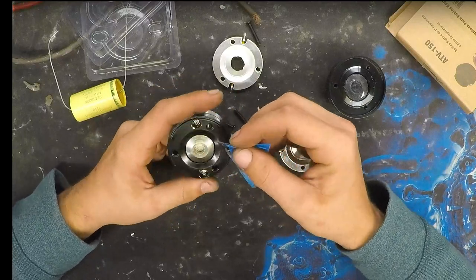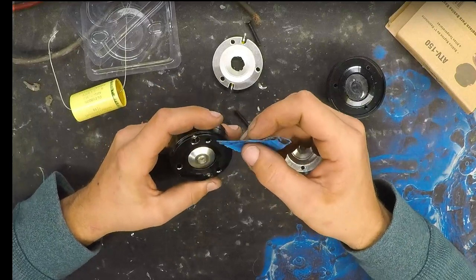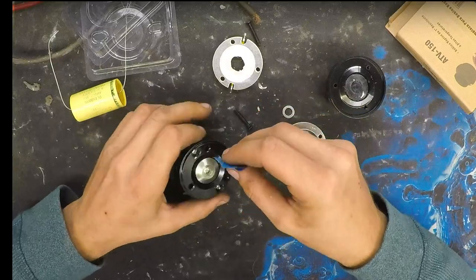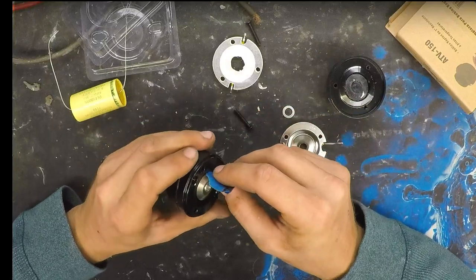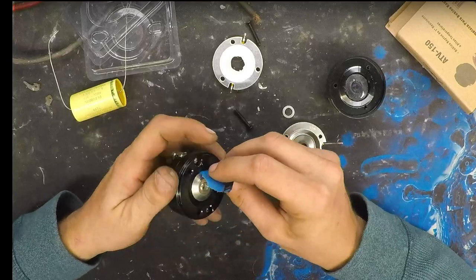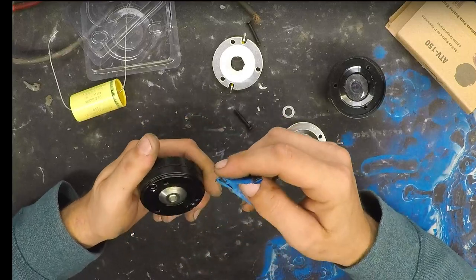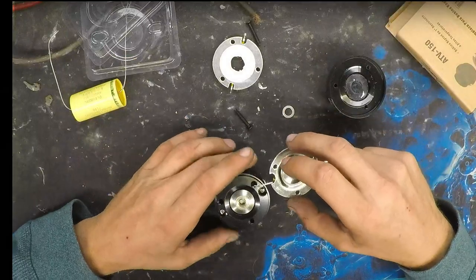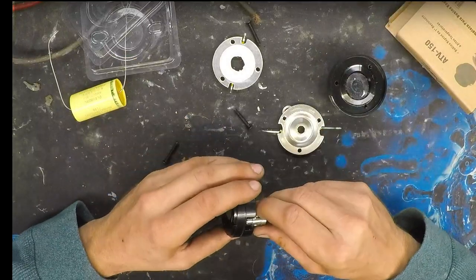This is what the manufacturer provides to recone these or recommends to recone these tweeters. You can buy ferrite fluid from Parts Express if I'm not mistaken and a few other spots online. Ferrite fluid helps conduct the heat from the voice coil into the magnet.